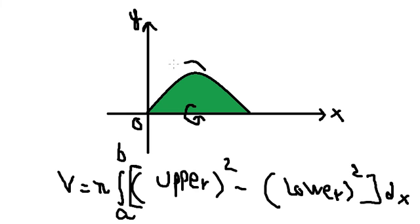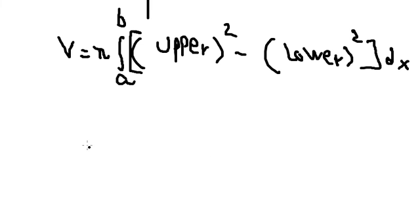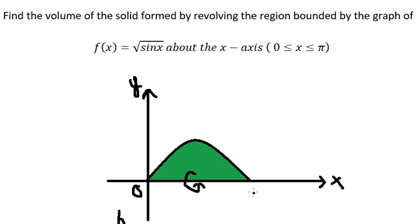This curve here is the upper function. The lower curve here is y equal to zero, that's the lower function. We put everything in here with the bounds from zero to pi.